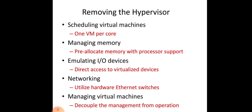Type 1 is called native or bare metal hypervisor; Type 2 is a hosted hypervisor. Type 1 runs directly on host hardware. It is used to control the hardware and to manage guest operating systems. For this reason they are sometimes called bare metal hypervisors.